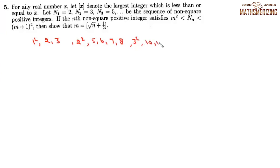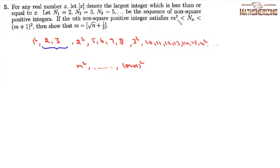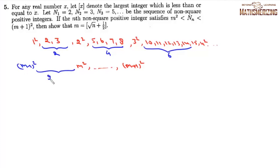Between 3² and 4² we have 6 non-square numbers. Between (m−1)² and m² there are 2m−1 non-square numbers, and between m² and (m+1)² there are 2m non-square numbers. If the nth number lies between m² and (m+1)², then n is greater than 2+4+6+···+(2m−2) = m(m−1) and at most 2+4+···+2m = m(m+1).